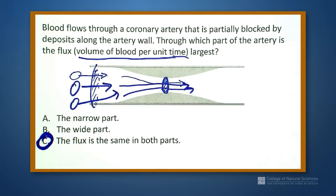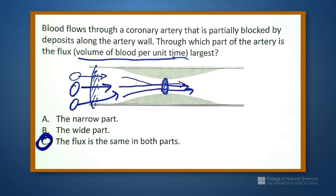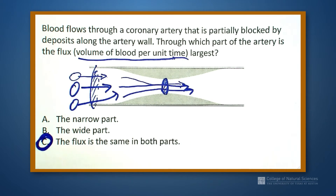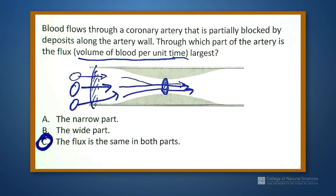This is actually just the continuity equation. The continuity equation says that we don't build up fluid at any point in our pipe — or in this case our artery. Continuity tells us that we get the same flux through both parts. That's not saying they have the same speeds or the same pressure, but they do have the same volume per unit time.